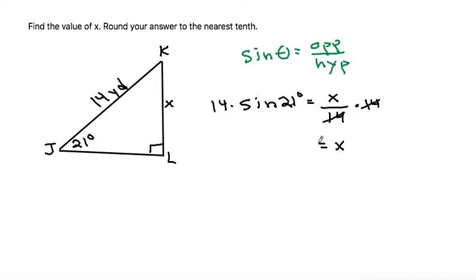Now, since it wants us to round our answer to the nearest tenth, we can grab our calculator, make sure it is in degree mode, and put in 14 times sine of 21. I get that to be 5.01, which rounded to the nearest tenth would be 5.0.